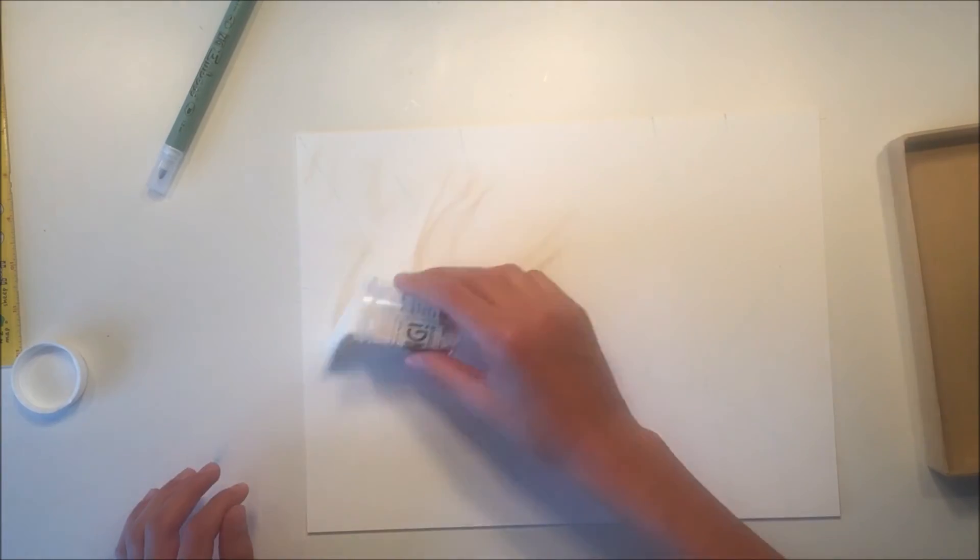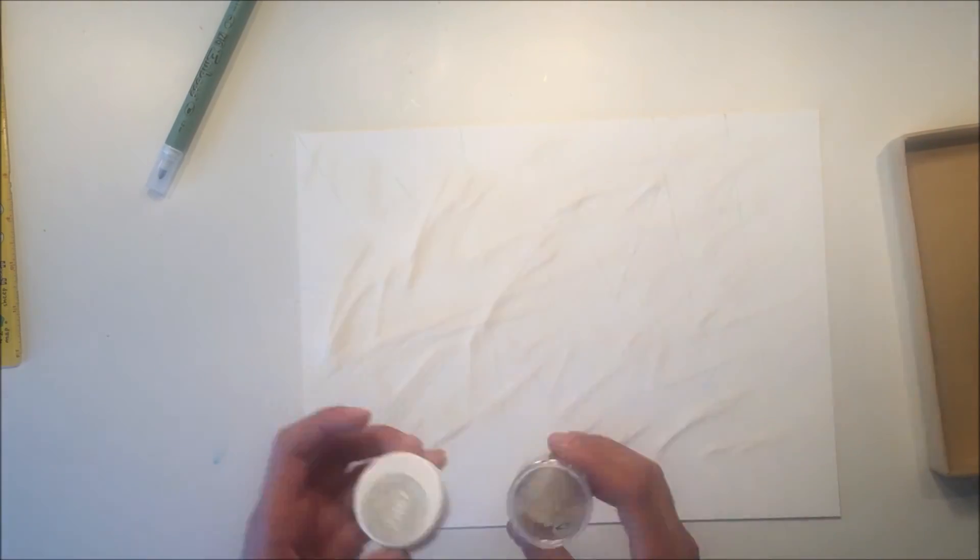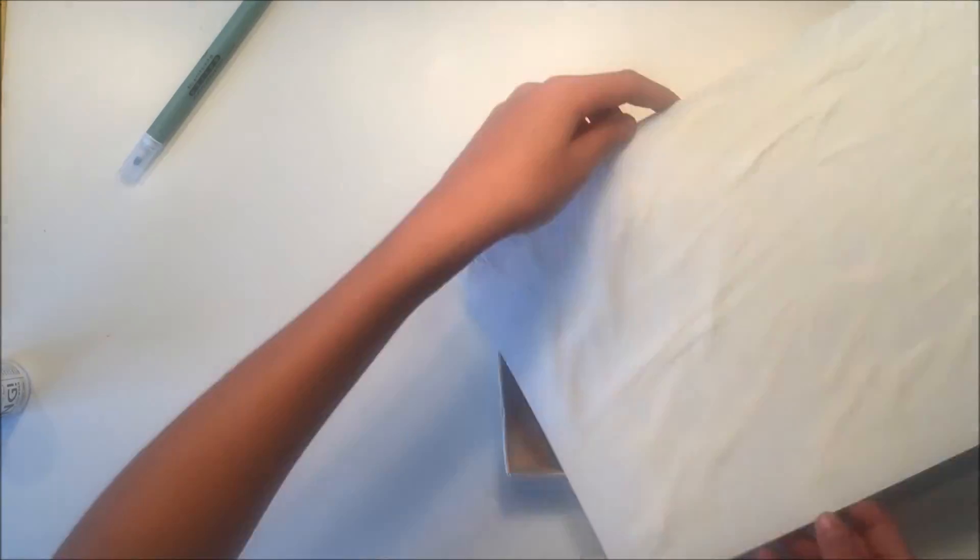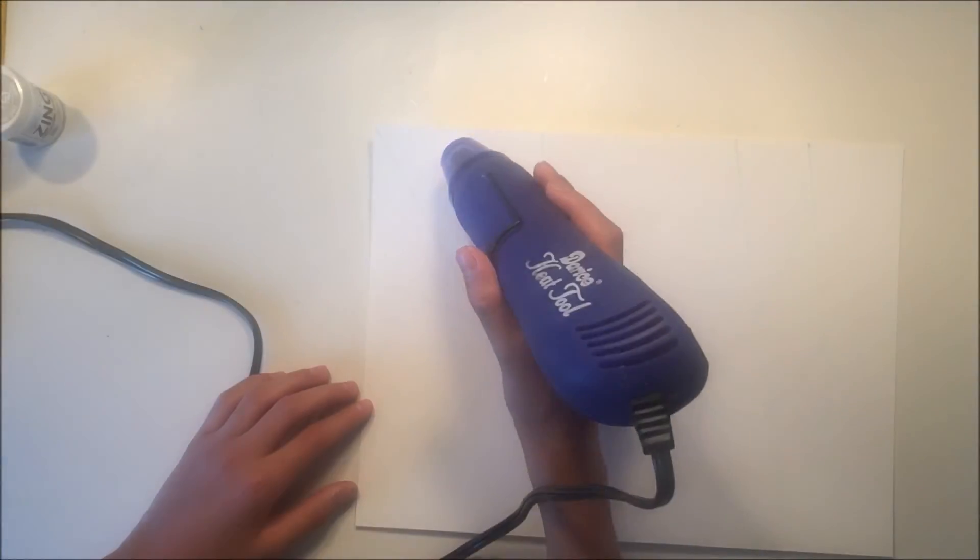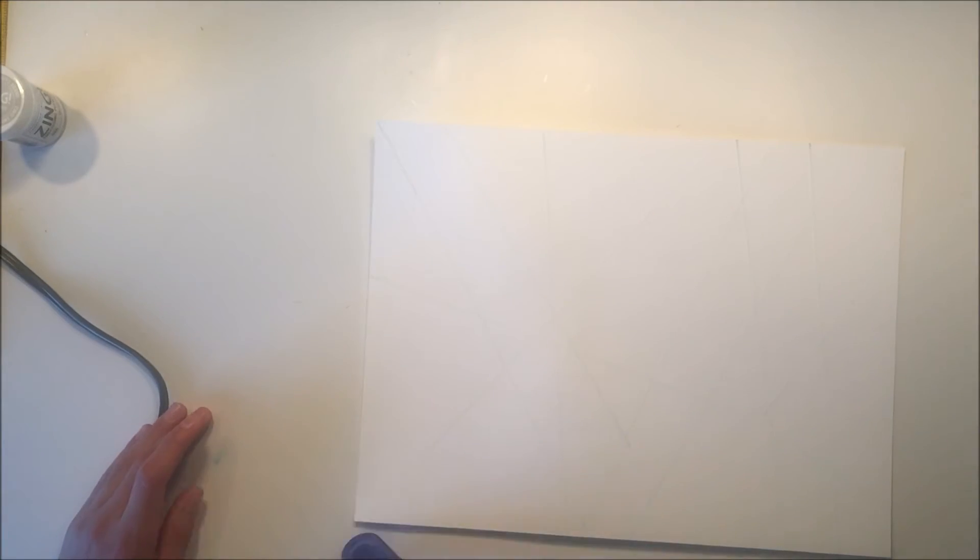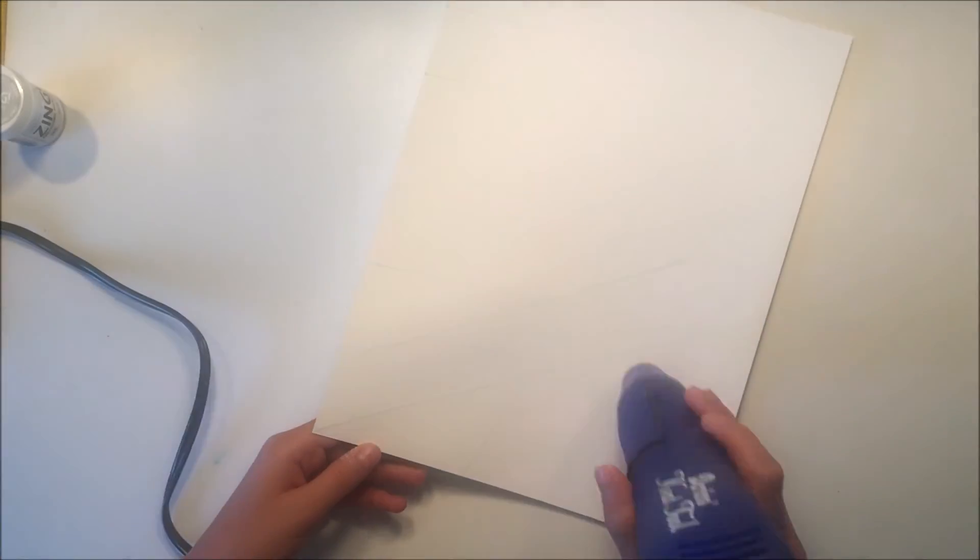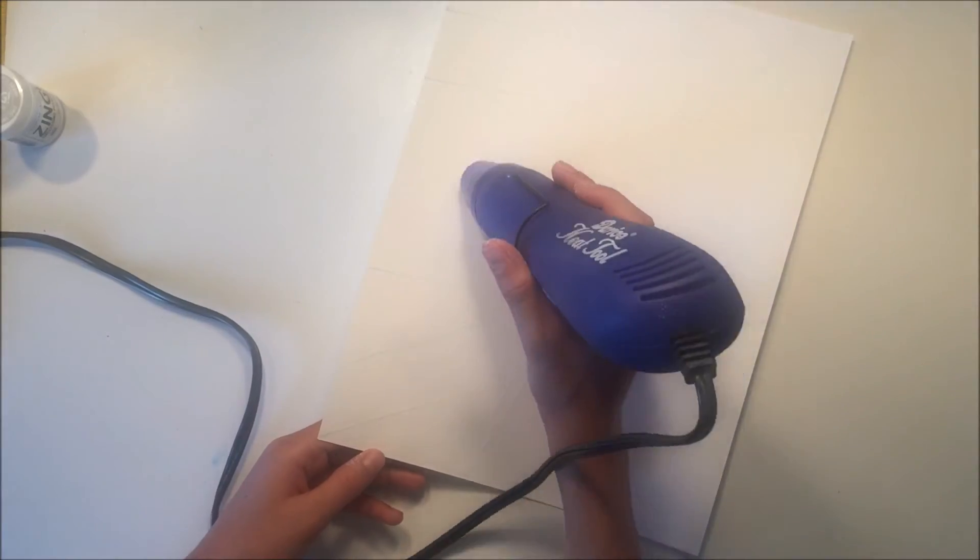He goes ahead and he does a lot of these lines, and then he puts the embossing powder on. Now I realize why there was embossing powder all over my desk because he kind of got it all over the place. Then again he needs to use the heat tool in order to melt that embossing powder and create those triangles. Here he is showing us a close-up of those triangles.